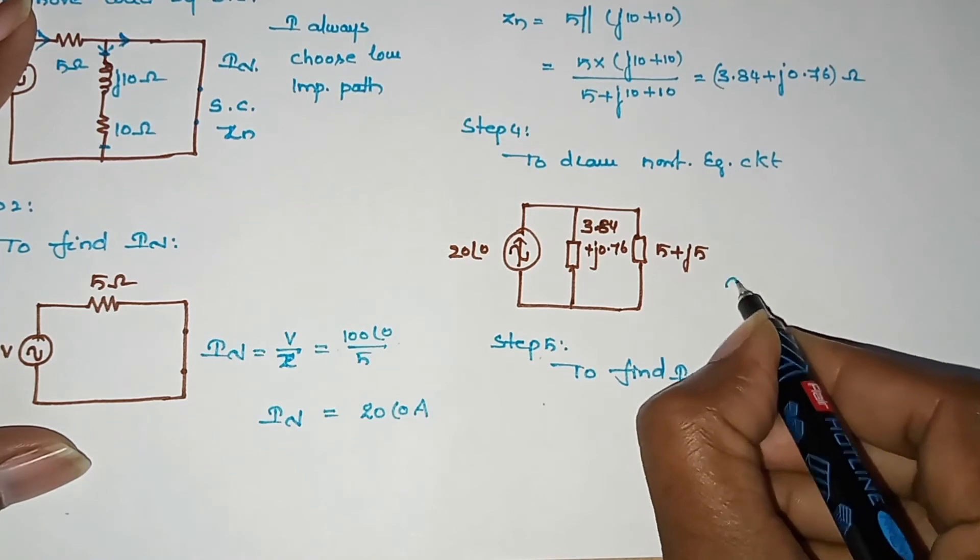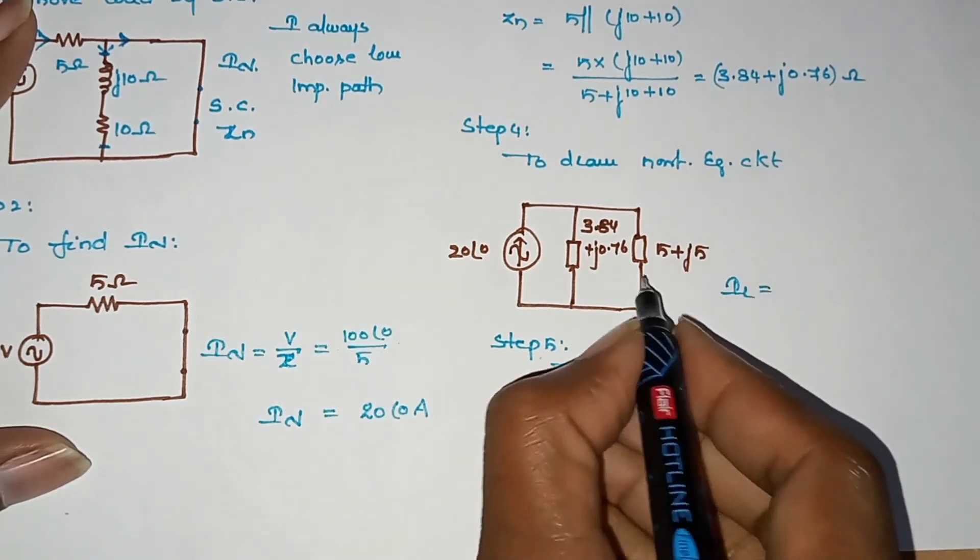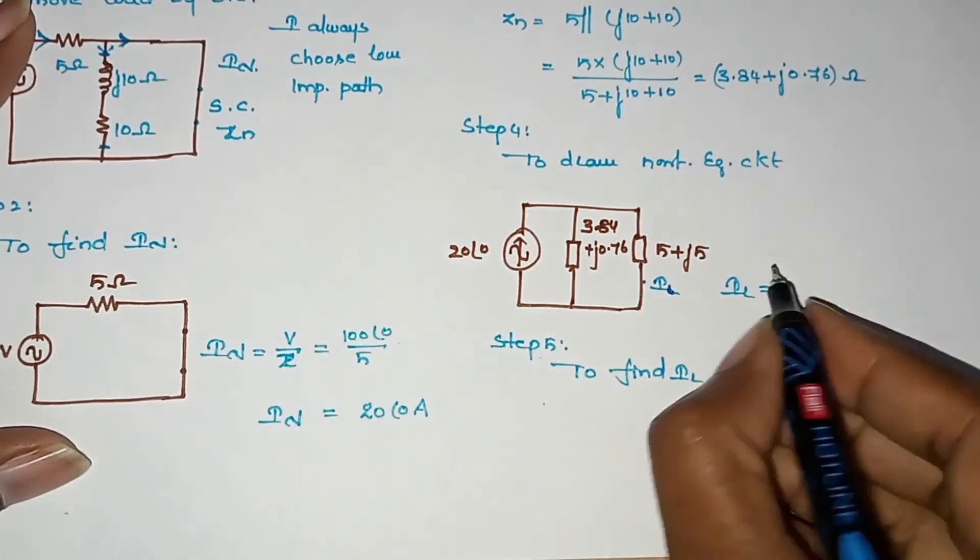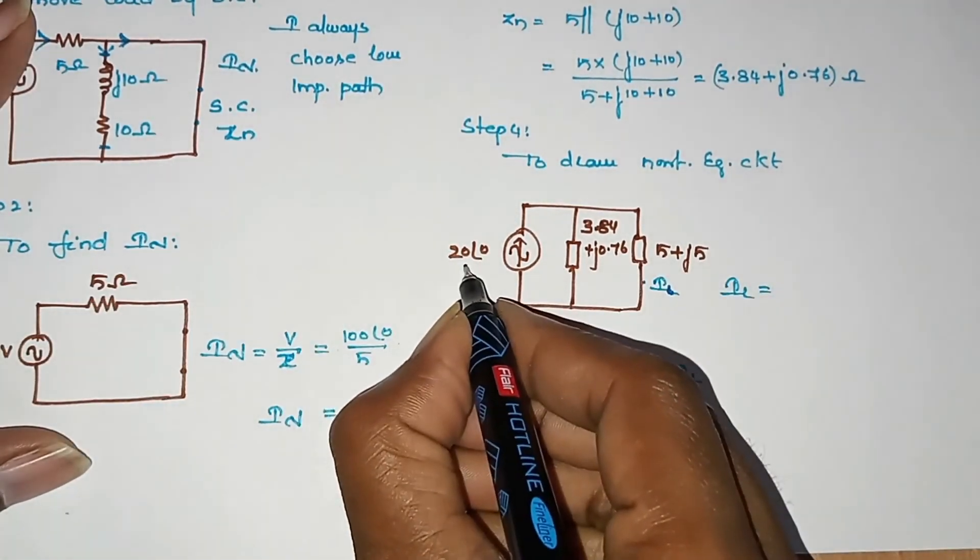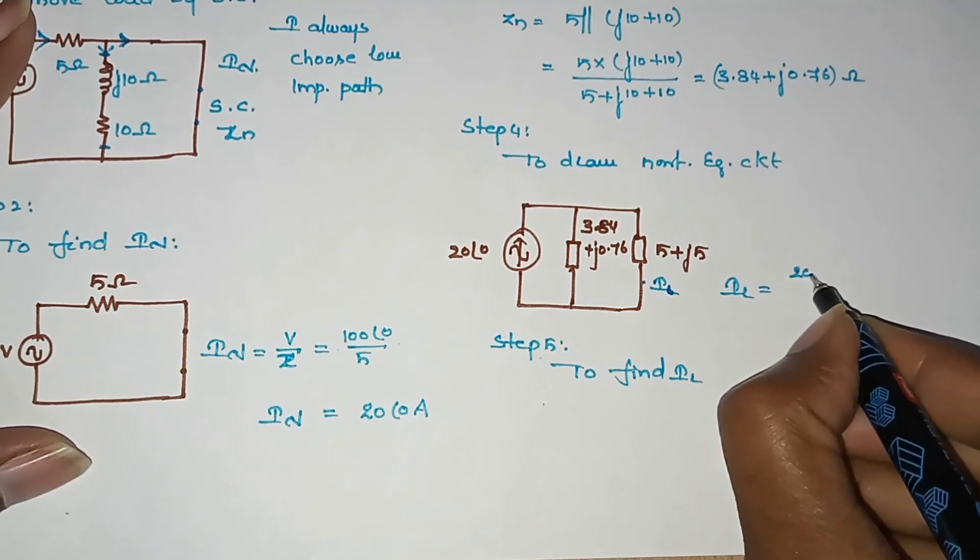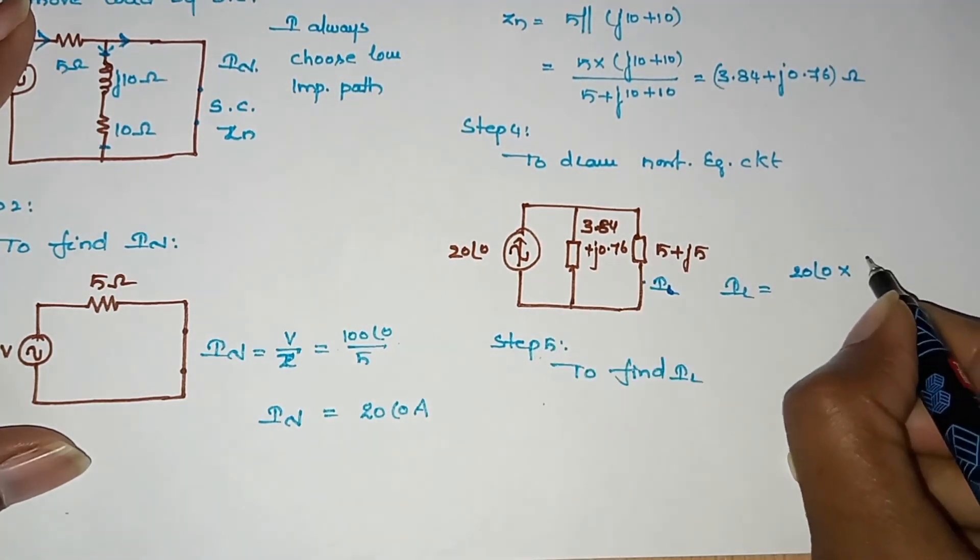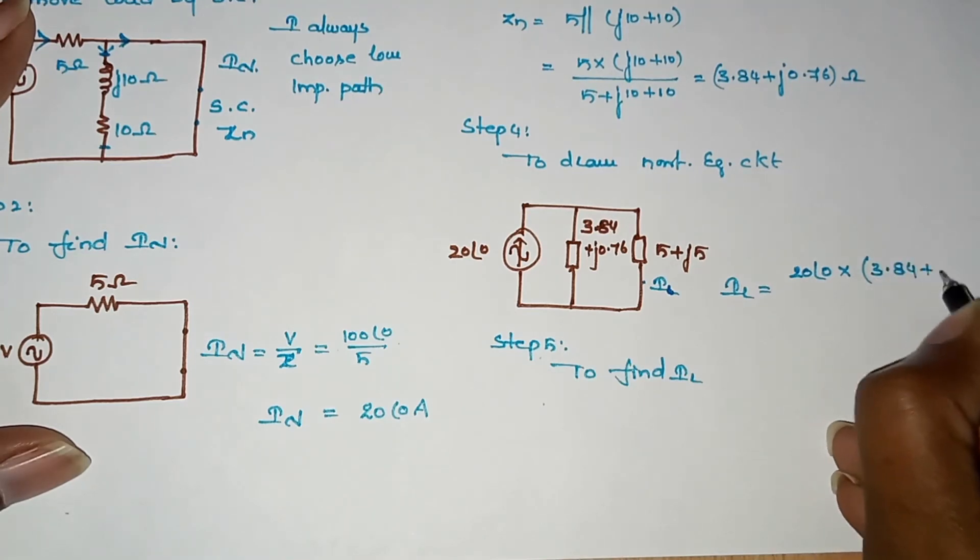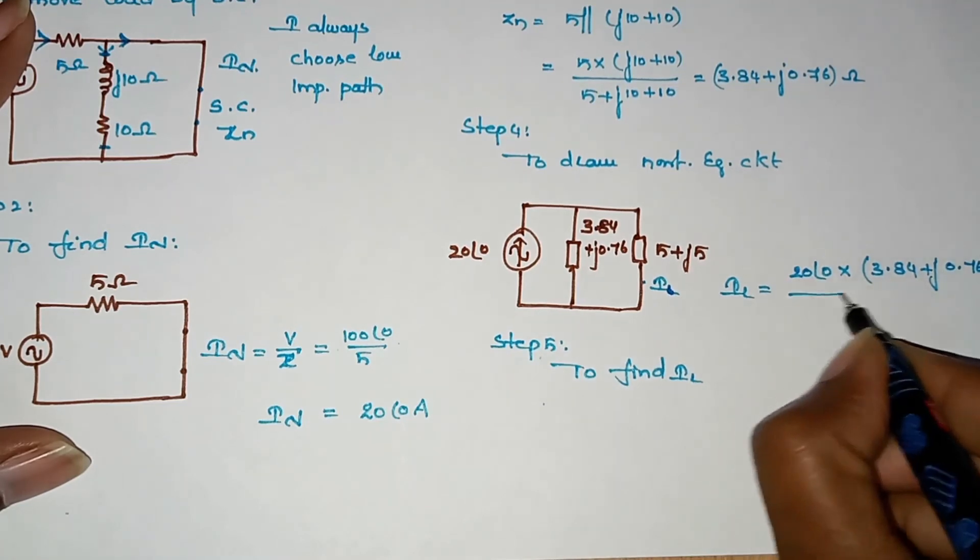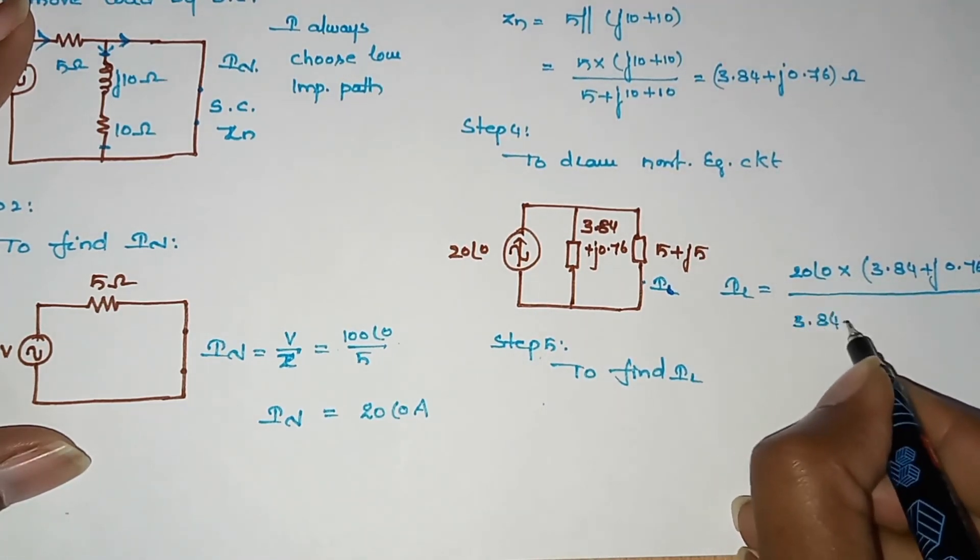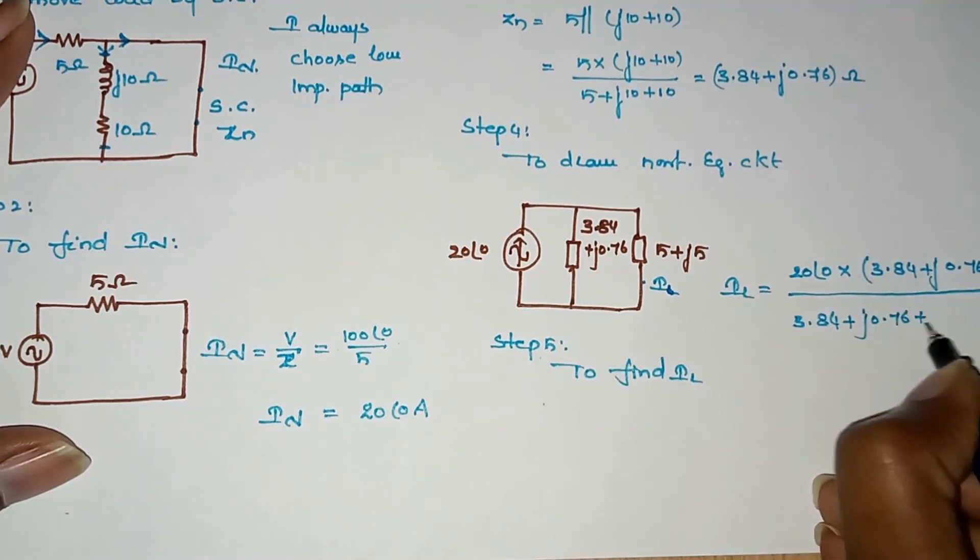The load is 5 plus j5. The last step: to find IL. Step 5: to find IL. So IL equals, using current divider and account, total current IN into ZN resistance.